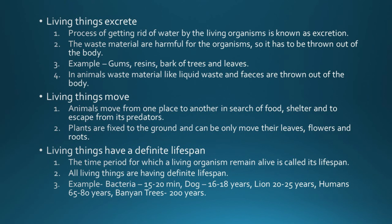The next characteristic is: living things excrete. The process of getting rid of waste materials by living organisms is known as excretion. Waste materials are harmful to the organism so they must be thrown out of the body. In plants, gums, resins, bark, and leaves are waste parts. In animals, liquid waste like sweat and urine, and solid waste, are thrown out of the body.